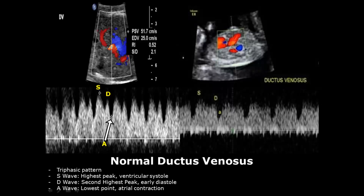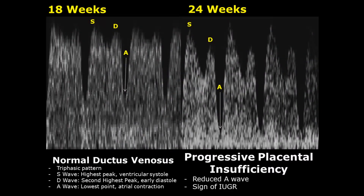The A wave is more important in diagnosing certain conditions such as placental insufficiency, IUGR, and cardiac anomalies. In the first image you can see a normal ductus venosus at 18 weeks, where the A wave is normal. In the second image, taken at 24 weeks of the same fetus, you can see a reduction in the A wave, which can be a sign of placental insufficiency and IUGR.